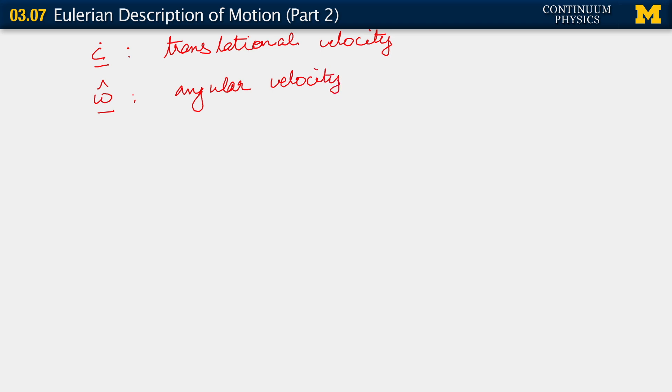It's a vector. And so we've seen that in writing out the Eulerian or spatial velocity, we have come to a form which should be very familiar to us. It's the translational velocity plus the angular velocity vector crossed with the position of every point relative to the motion described by this translation.